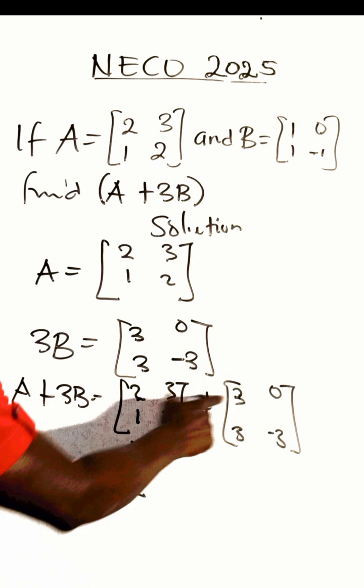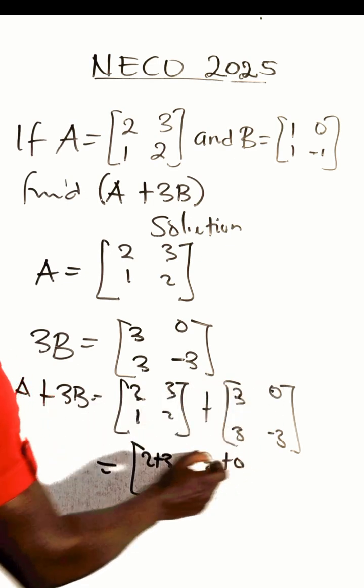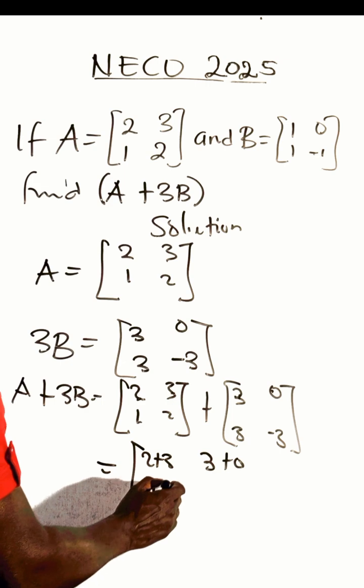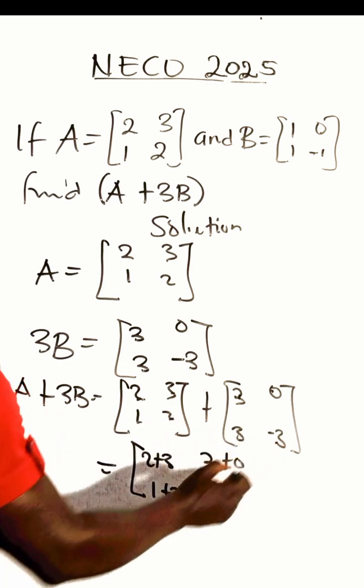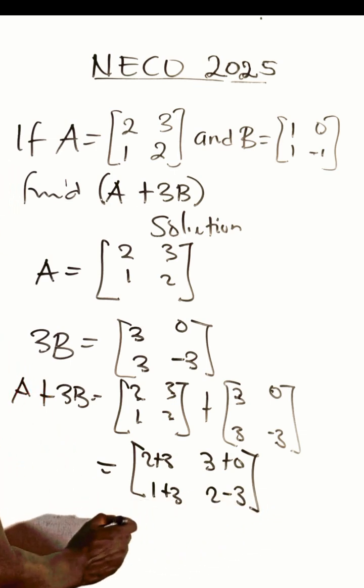Then this one will be 3 plus 0 and here will be 1 plus 3. Then this other two will be added, 2 minus 3. This is a new matrix that will be formed.